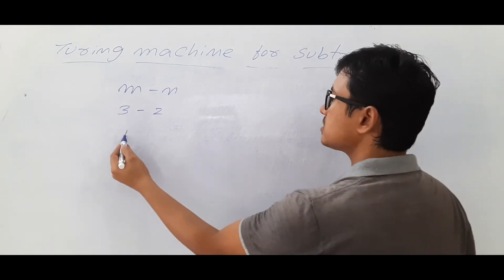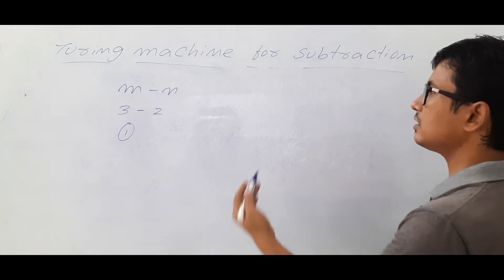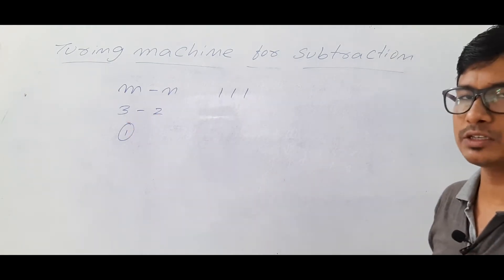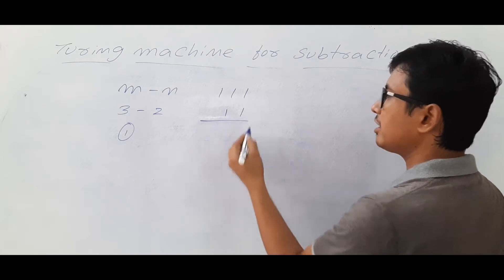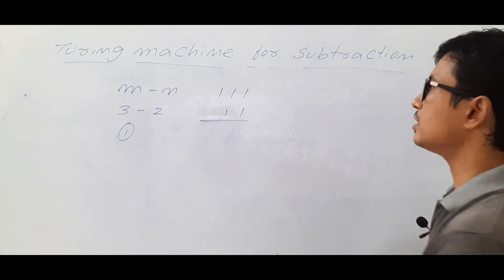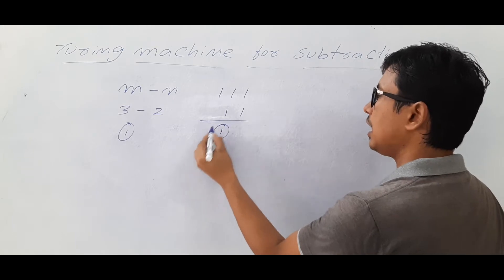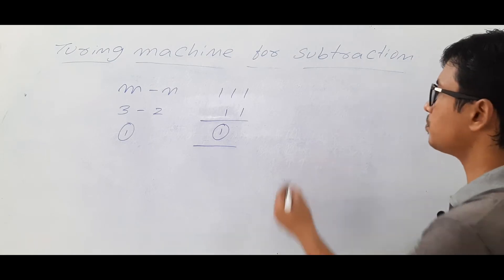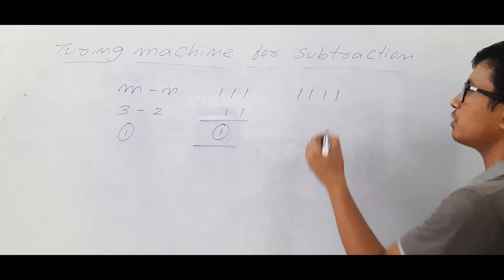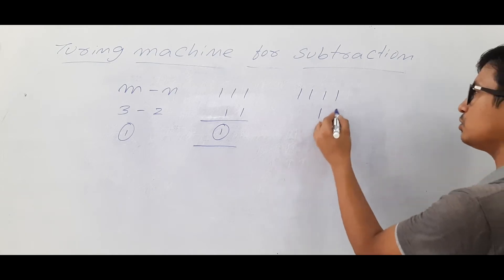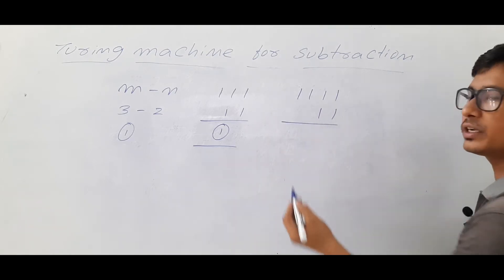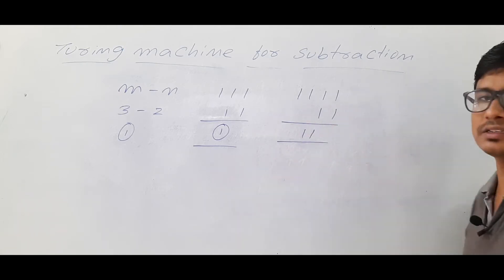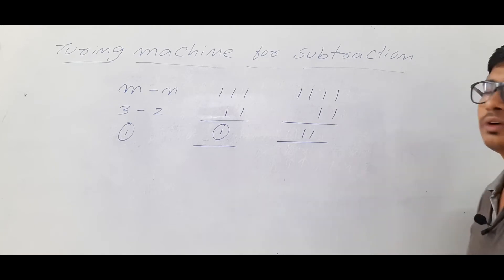I should get the result as 1. In the Turing machine, I will represent 3 as a unary number and 2 as a unary number, so 3 minus 2 gives 1. The number of ones in the output represents the actual value. If m is 4 I represent it as four 1s, and if n is 2 I represent it as two 1s, so the output should be two 1s.